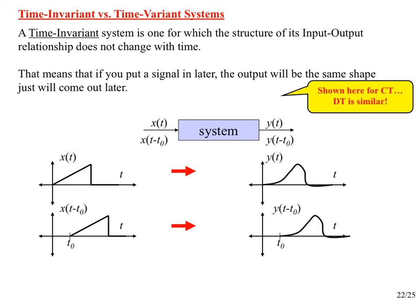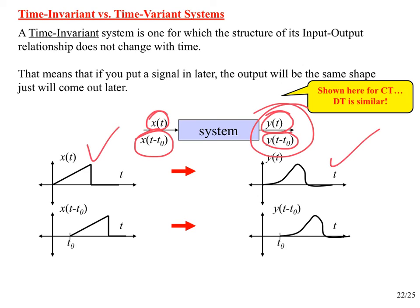Time invariant versus time variant: a system is time invariant if putting in X(T) gives Y(T), and putting in a shifted version of that input gives a shifted version of that output. This must hold for every possible signal and every possible shift. It can be tricky to show in general, but the idea is simple.